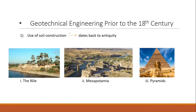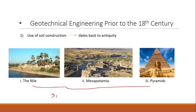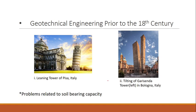Geotechnical engineering prior to the 18th century: the use of soil in construction dates back to antiquity, such as the Nile River and the Tigris and Euphrates in Mesopotamia, and the most important pyramids. Many of these structures were constructed on silt and soft clay layers. In some cases, the foundation pressure exceeded the load bearing capacity of the soil, causing extensive structural damage.